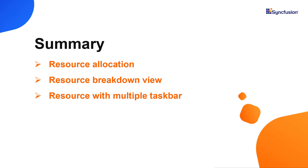In this video, I have shown you how to allocate one or more resources to tasks in the Gantt chart. I also showed you the resource breakdown view and resource multi-taskbar. You can download a working example from the GitHub link in the description below. You can also check whether you're eligible for our community license, which provides a free license key to use our products. Thank you for watching. If you found it useful, give it a like and subscribe to our channel.